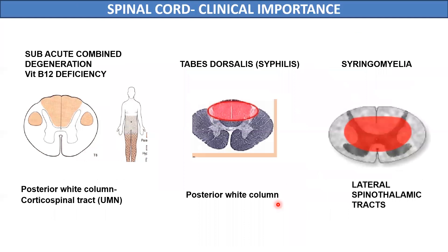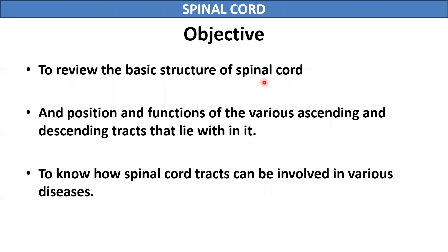Correct and adequate knowledge of anatomy and physiology of the spinal cord is of prime importance so that we can accurately localize and diagnose a disease or injury. Moreover, the tracts of the spinal cord can be involved in various diseases like dietary deficiency of vitamin B12, infections like syphilis, or degenerative diseases like syringomyelia. In this lecture, we will study the basic structure of the spinal cord and the position and functions of various ascending and descending tracts.